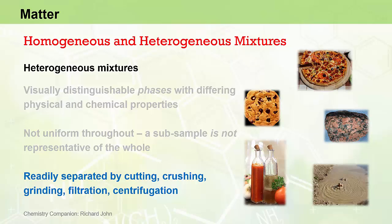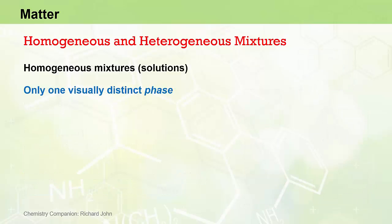That's a little different from homogeneous mixtures, as we will see. Whereas heterogeneous mixtures have two or more visibly distinct phases, homogeneous mixtures consist of two or more substances mixed together where only one visually distinct phase is apparent, and this phase has uniform properties.